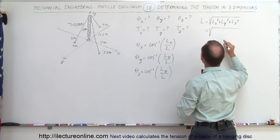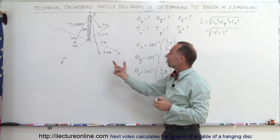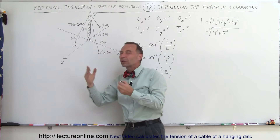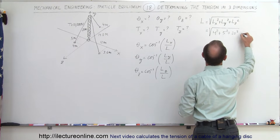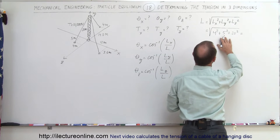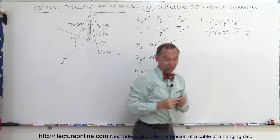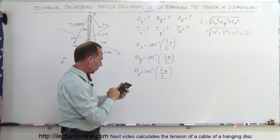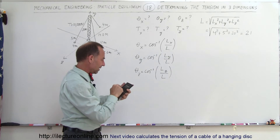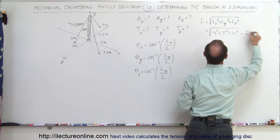So L sub x is 4 meters squared, L sub z is 5 meters squared — even though the x-direction is negative, we don't care because we're squaring it — and the y-direction is 20 meters squared. That gives us 16 plus 25 plus 400, which equals 441. The square root of 441 is 21 meters. So the total length is 21 meters.